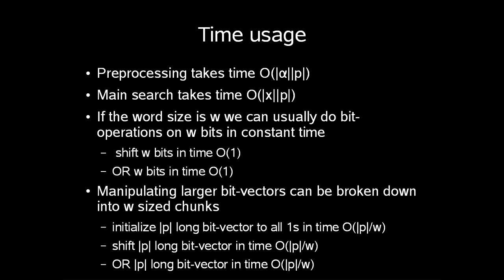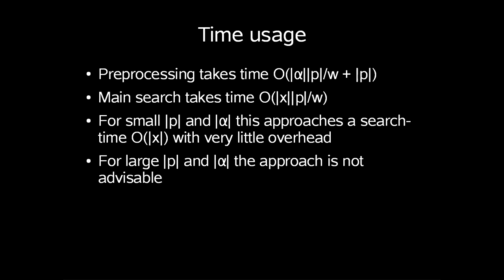Shift |p| long bit vector in time O(|p|/w) and OR |p| long bit vector in time O(|p|/w). The preprocessing takes now time O(|alphabet| × |p|/w + |p|).